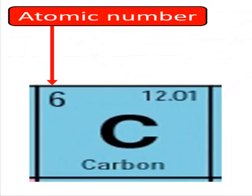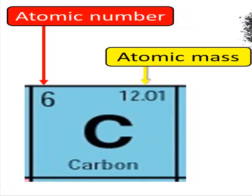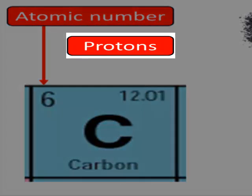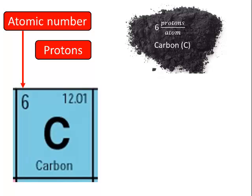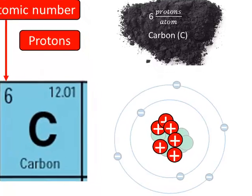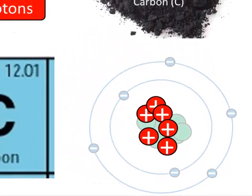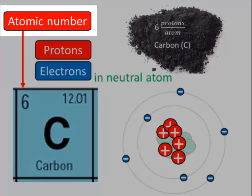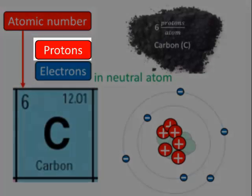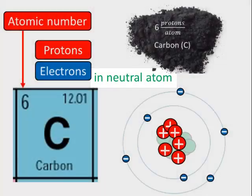Let's for now simplify that to 12. What do these numbers mean? The smaller number, 6 in this example, is the atomic number. And the bigger number, 12 here, is the atomic mass. The atomic number tells you how many protons each atom of that element has. Carbon has 6 protons per atom. So here's a picture of a carbon atom. And you can count 1, 2, 3, 4, 5, 6 protons in the nucleus of the atom. And because this is a neutral atom, it also has 6 electrons. So the atomic number tells us how many protons and how many electrons in a neutral atom.